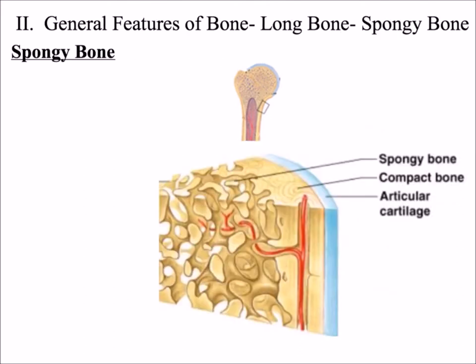The second type of bone is called spongy bone. Spongy bone is also known as cancellous bone — that's the actual name — but spongy bone makes more sense because it looks like a sponge.